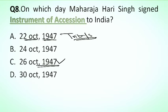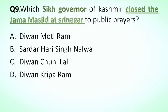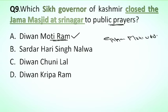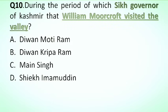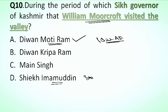Next question is: which Sikh governor of Kashmir closed the Jama Masjid at Srinagar to the public? Options: A. Diwan Moti Ram, B. Sardar Singh Niwala, C. Diwan Chunilal, D. Diwan Kripa Ram. The correct answer is option A, Diwan Moti Ram. He closed the Jama Masjid for the public. It was reopened by Ghulam Mohiuddin, another Sikh governor of Kashmir. Next: during the period of which Sikh governor did William Moorcroft visit the valley? The correct answer is Diwan Moti Ram. William Moorcroft visited the valley in 1822 AD during his time. Sheikh Ahmaduddin was the last Sikh governor of Kashmir Valley.